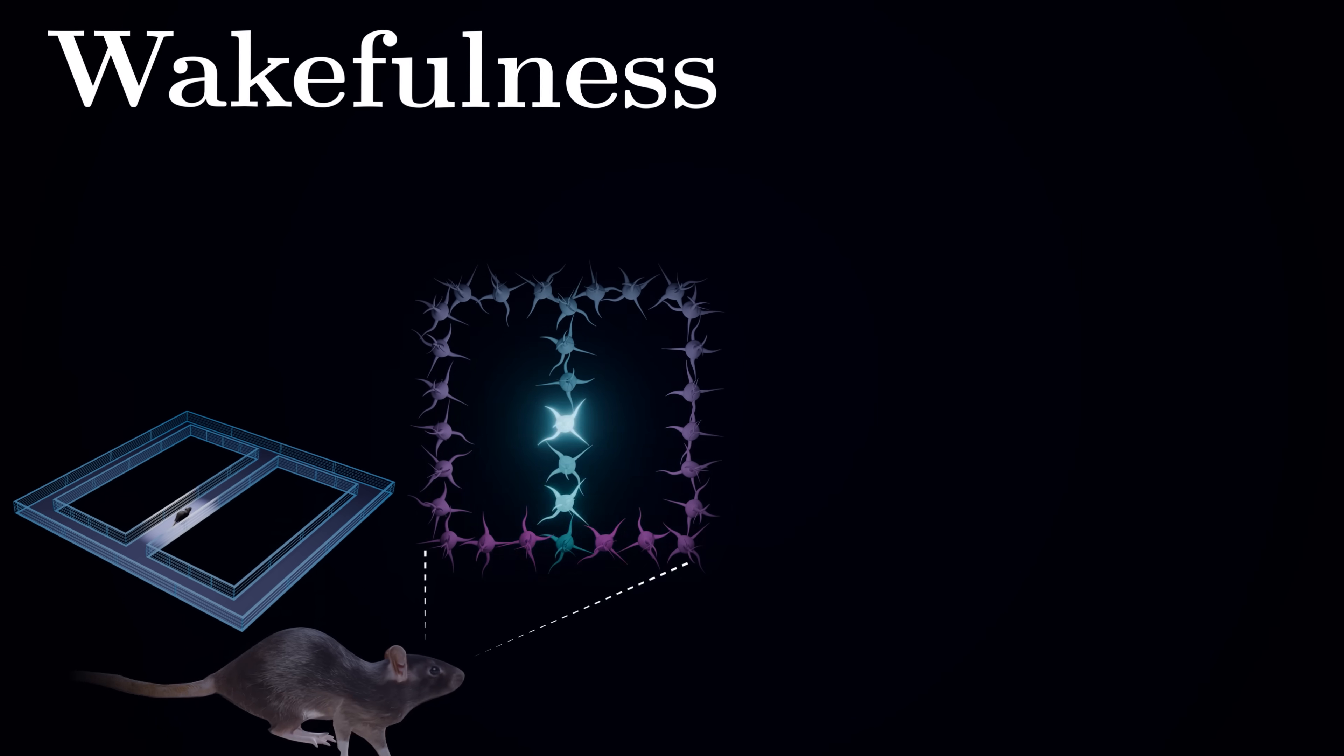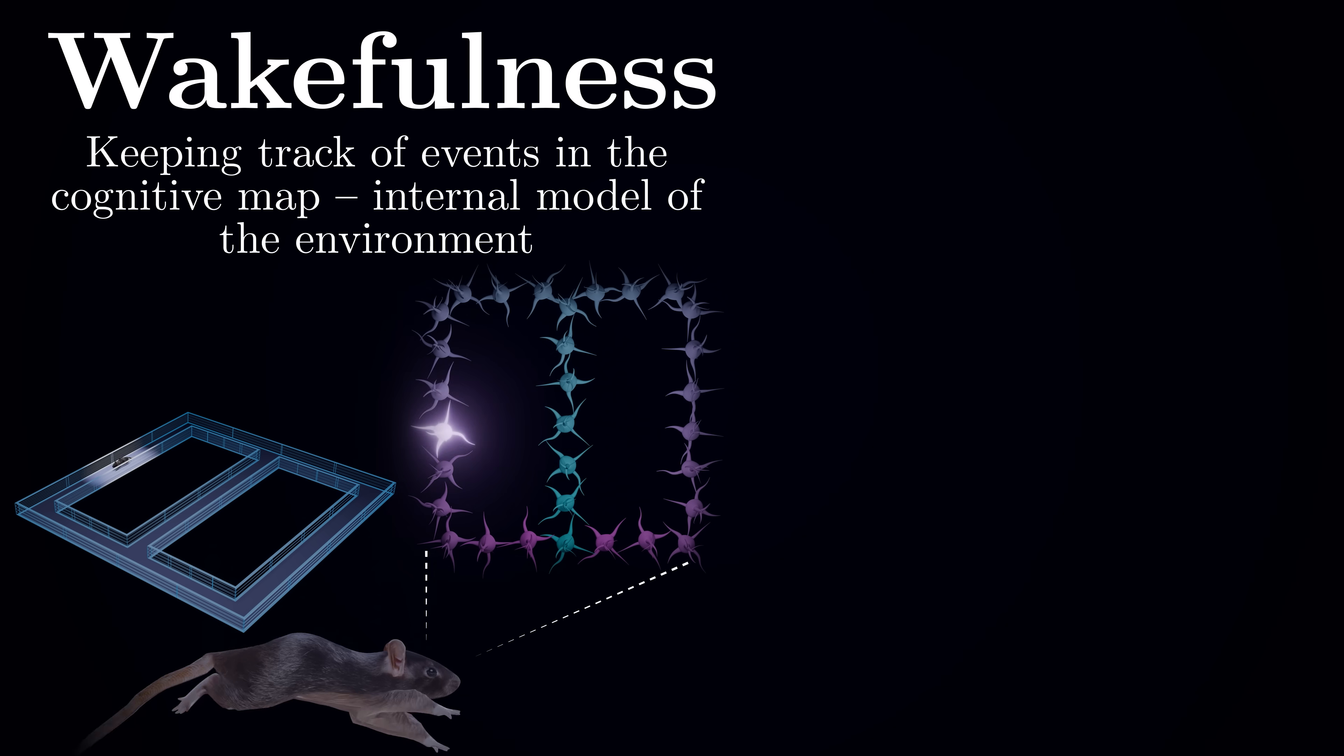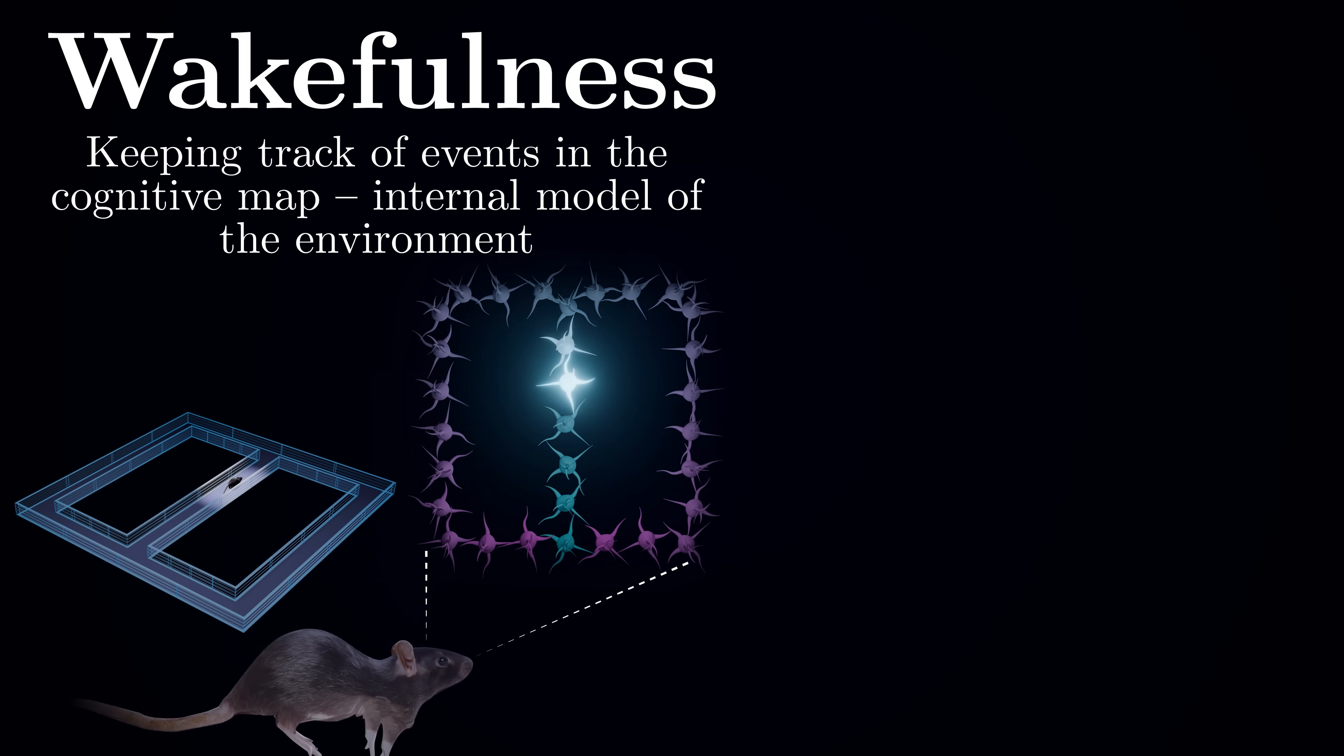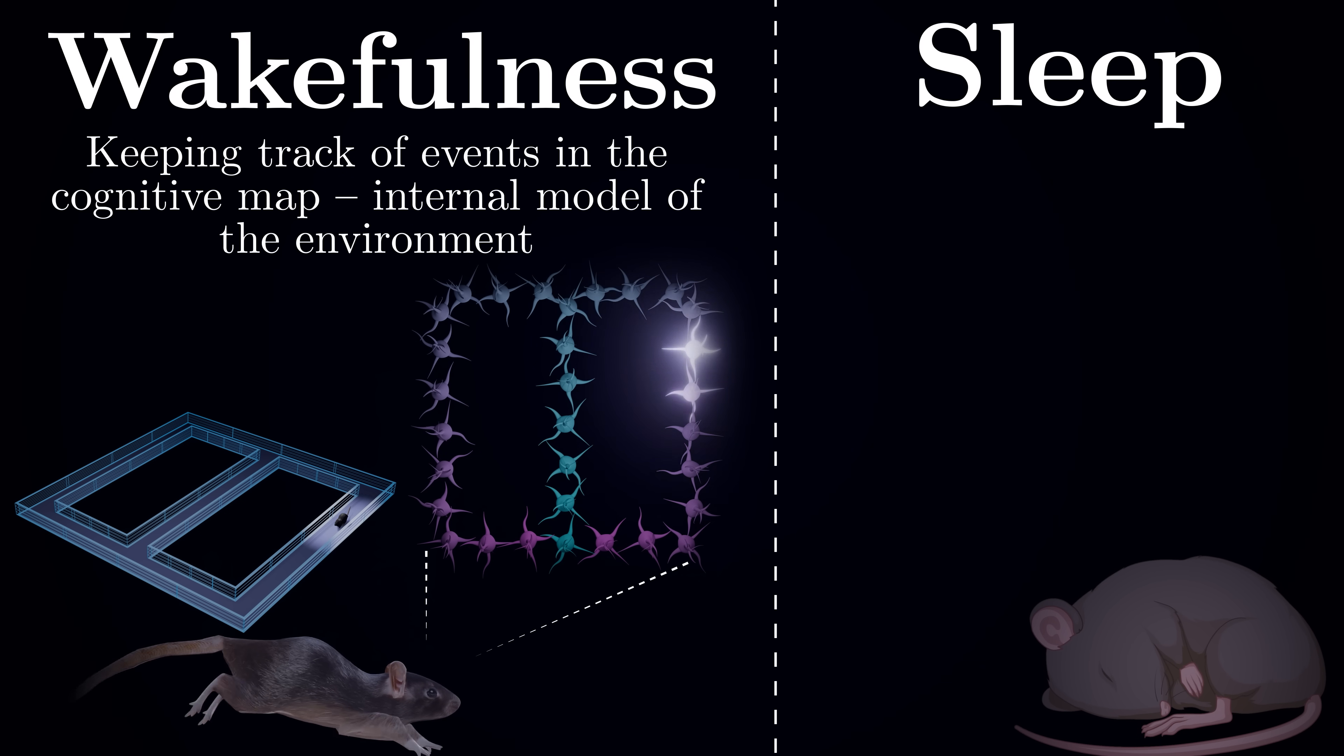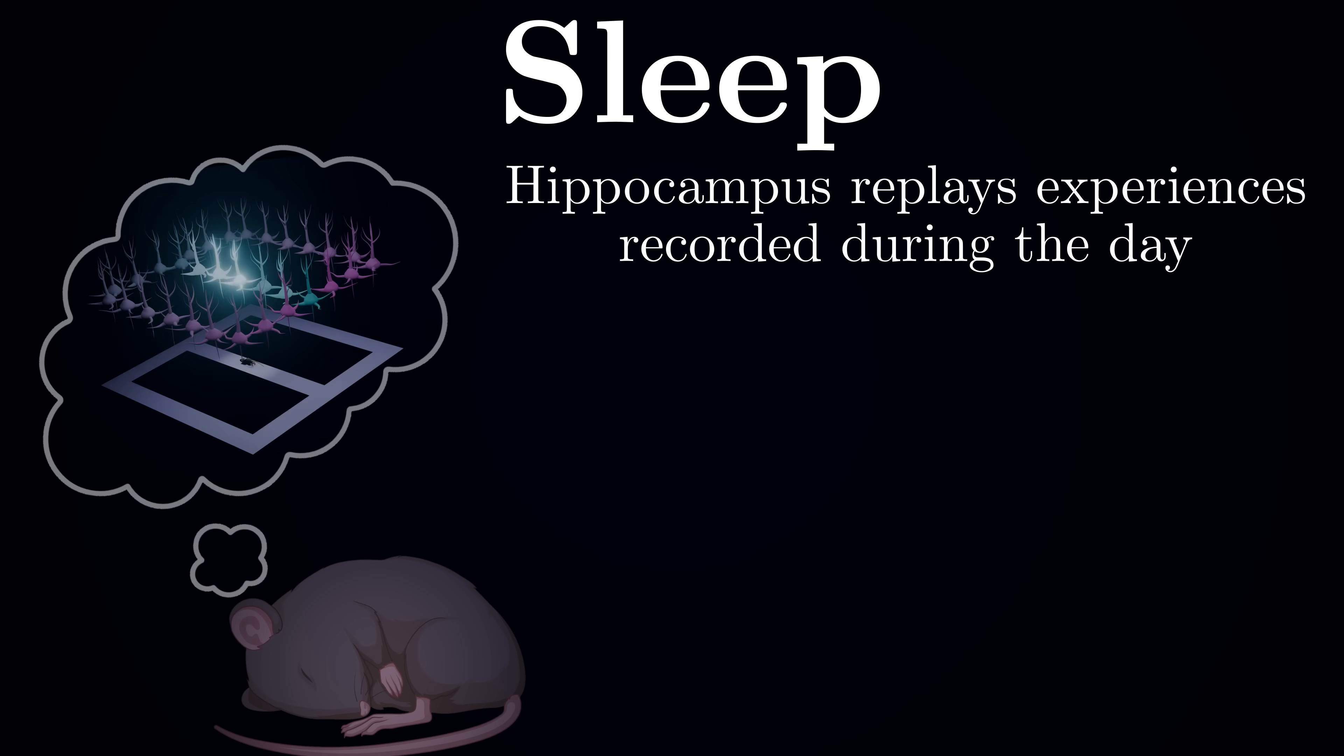What makes the hippocampus particularly intriguing is how it switches between two distinct modes. During waking hours, it diligently records experiences, tracking where things happen and in what order. It builds what's called a cognitive map – a rich internal model of the environment and the events within it. However, during sleep, when sensory inputs quiet down, the hippocampus enters an offline mode where it replays specific experiences from the day.